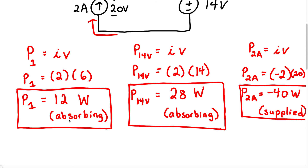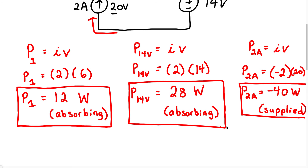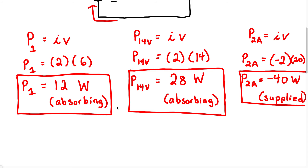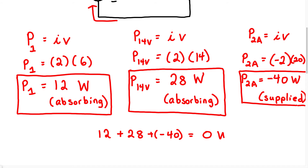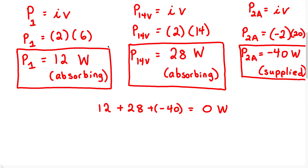You can do a quick check to verify your answers: the power absorbed must equal the power supplied, or equivalently, the sum of all powers must equal zero. Adding up: 12 plus 28 plus (negative 40) equals zero watts. Therefore, our answers are correct.